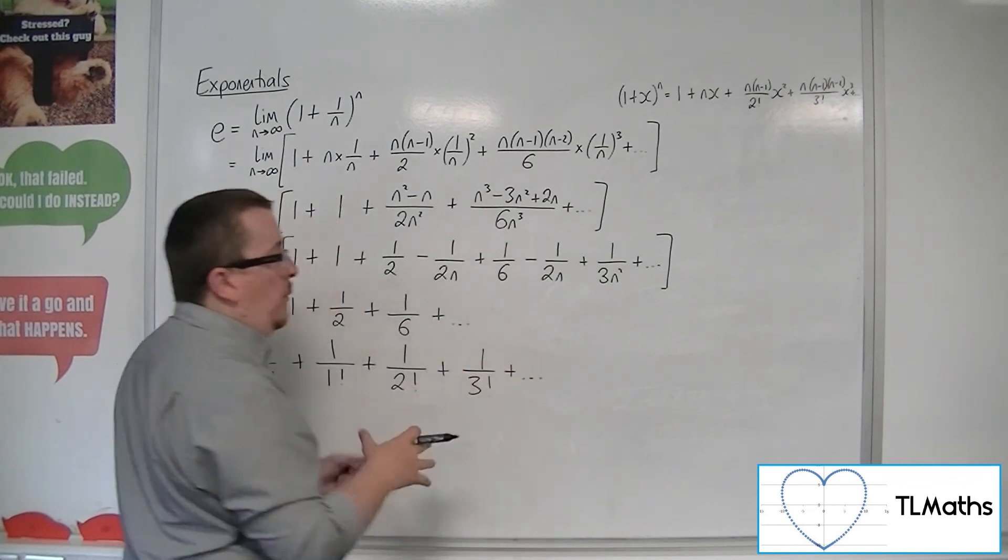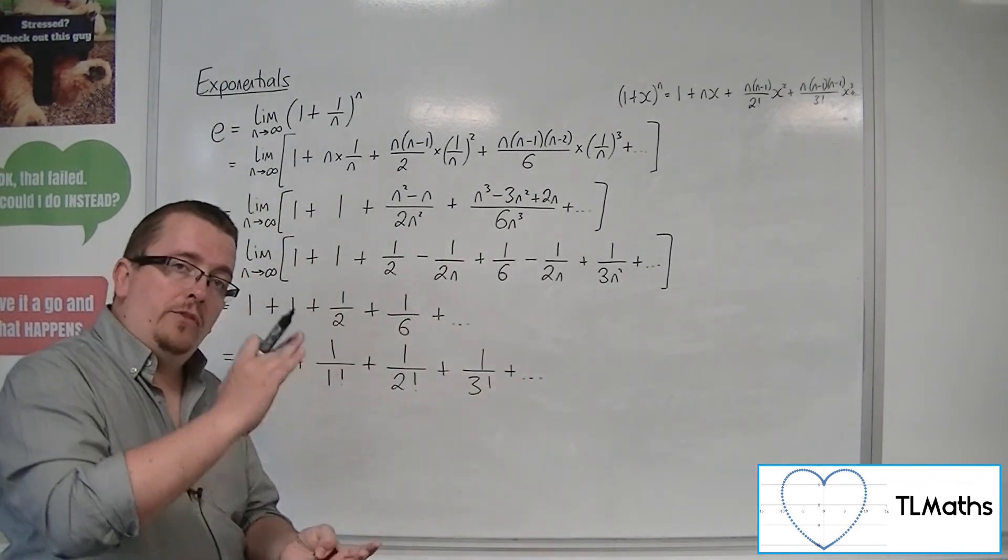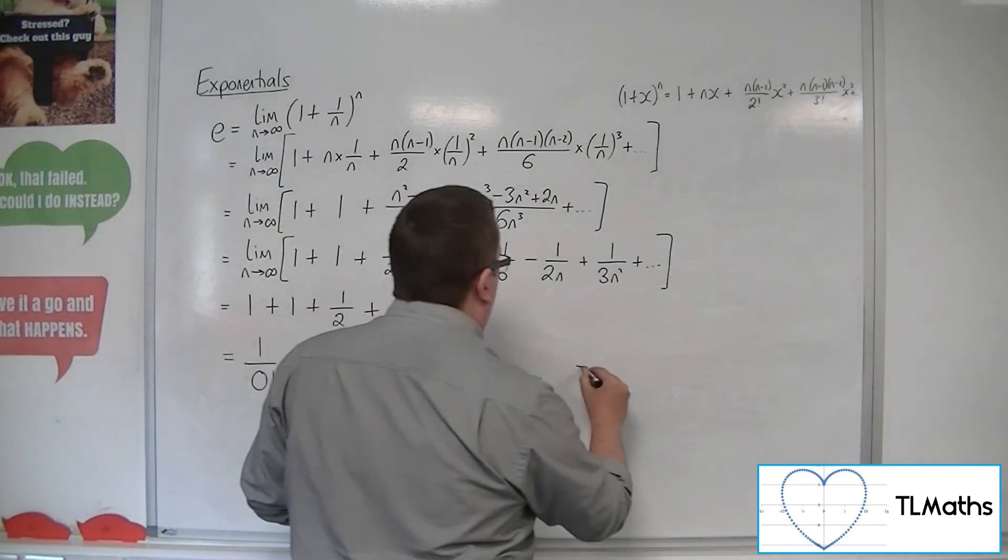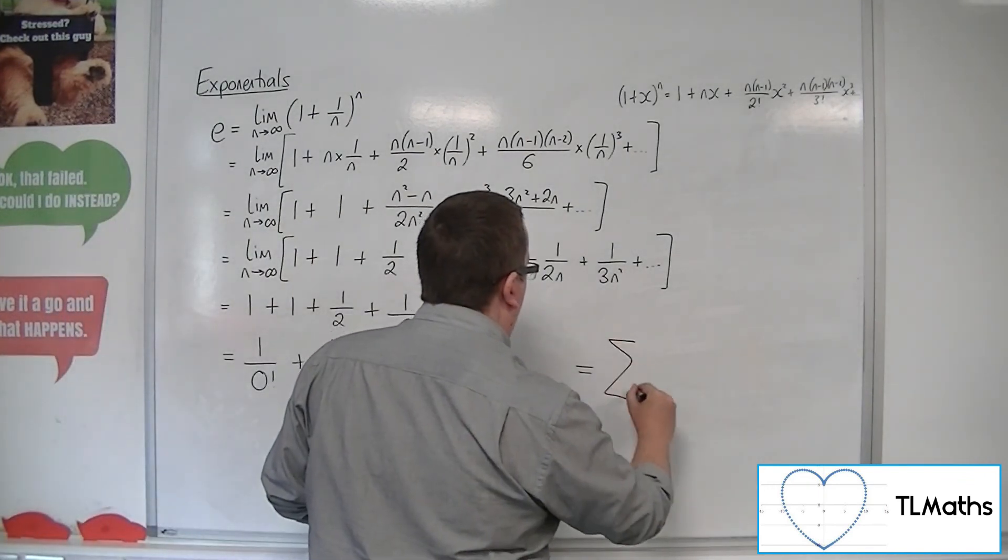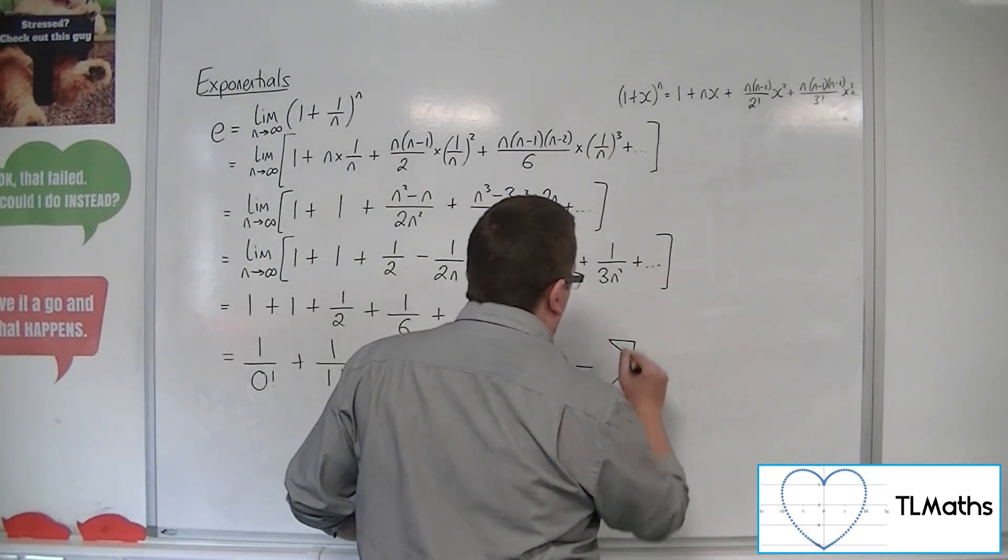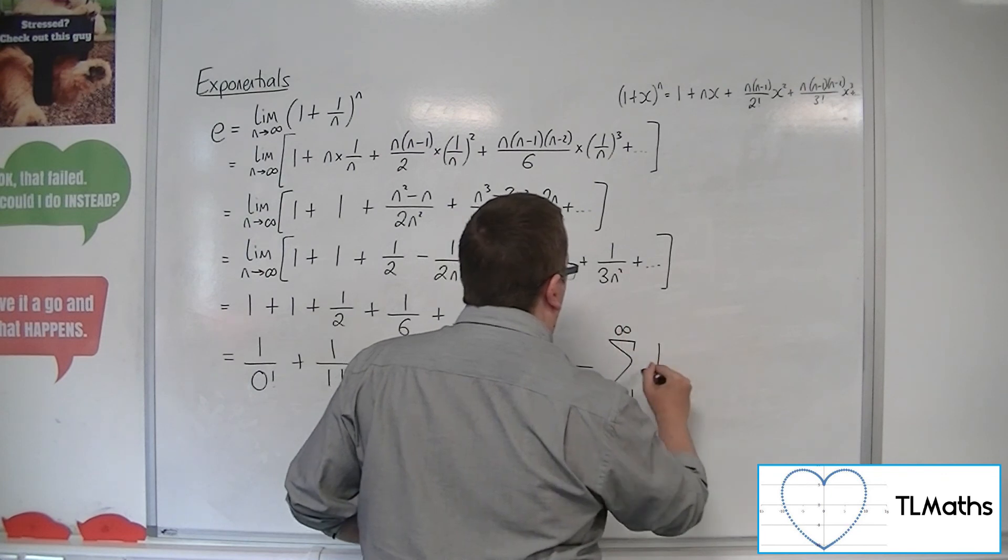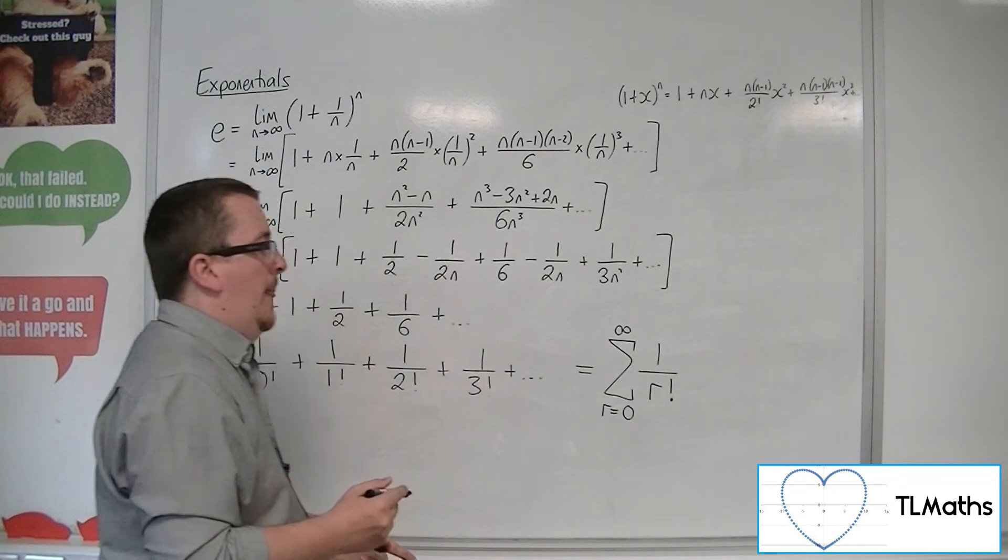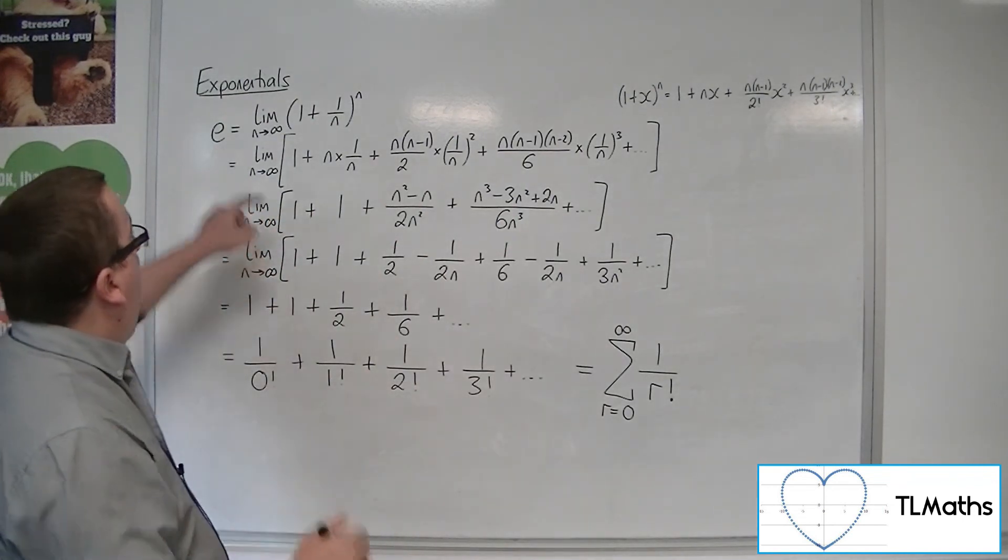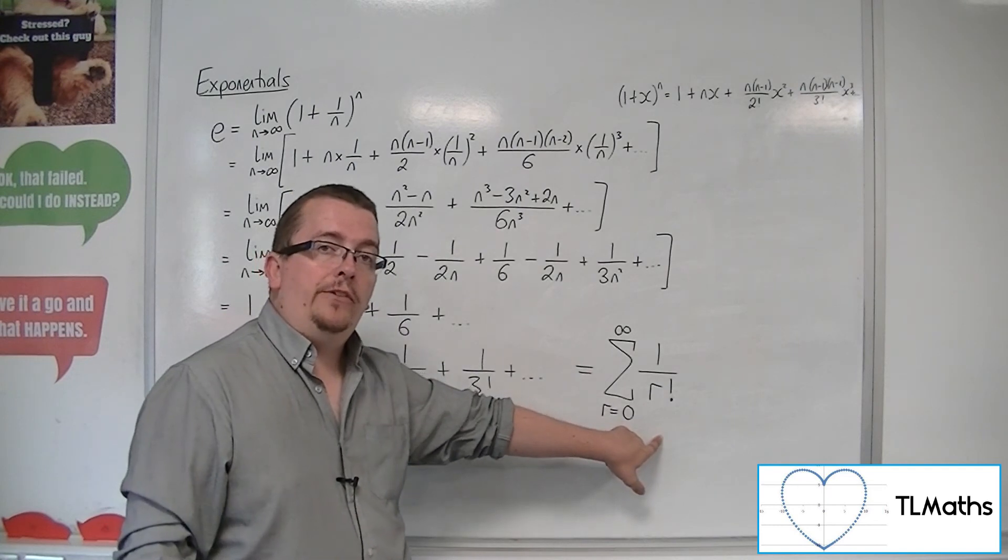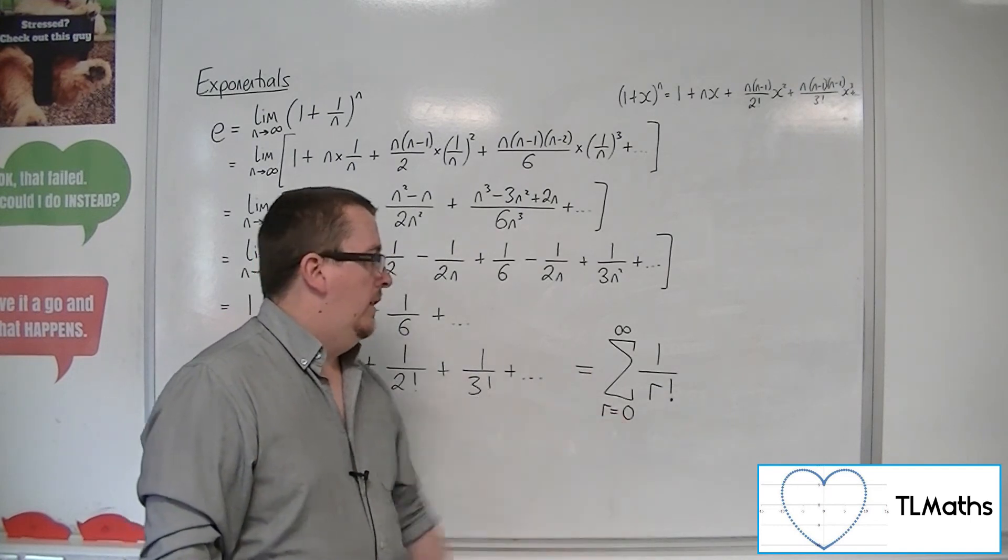And we're going to get 1 over 4 factorial, 1 over 5 factorial, 6 factorial, and so on. And so, we can write this as the sum of r going from 0 to infinity of 1 over r factorial. And so, e can also be written as an infinite series like so.